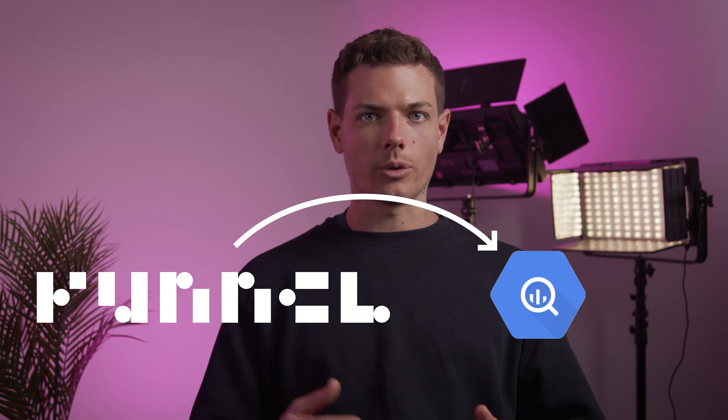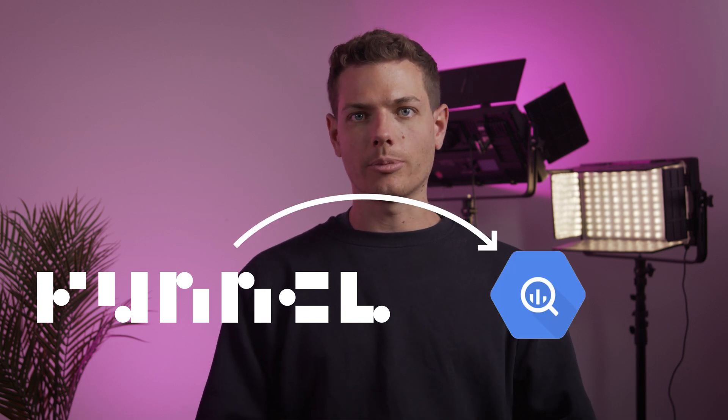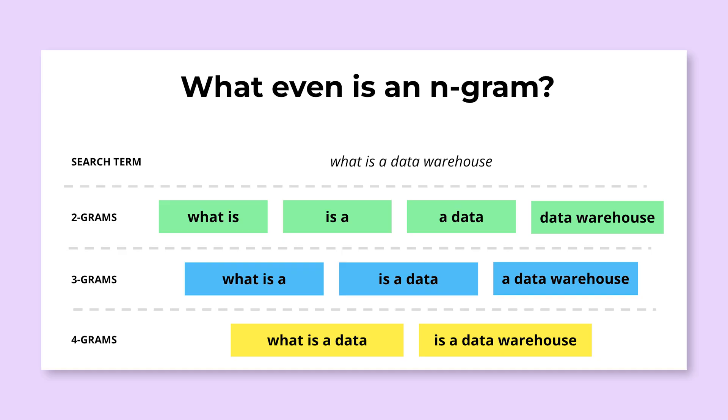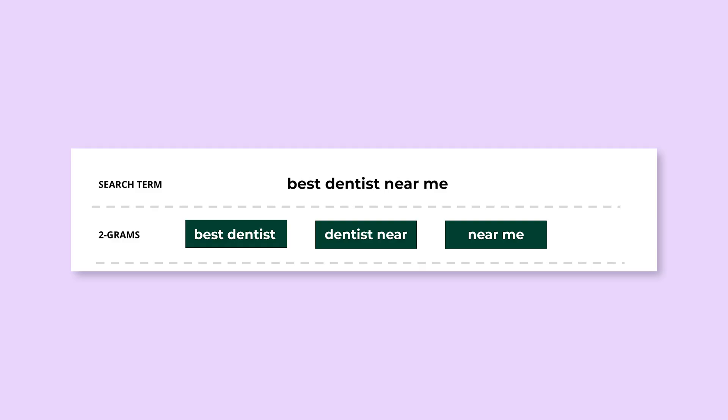The magic begins by collecting and centralizing historical ad data from all client accounts into a unified data warehouse. We use Funnel to easily get our data into BigQuery, one of the best data warehouses for marketing purposes. Then we dive deep into Ngram Analysis, slicing and dicing search terms into their constituent Ngrams. For instance, imagine a search term like 'best dentist near me' being broken down into bite-sized pieces like 'best dentist', 'dentist near', and 'near me'. This microscopic analysis uncovers hidden gems about which word combinations drive the best traffic and which ones fall flat.